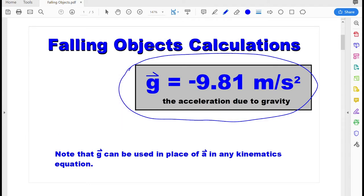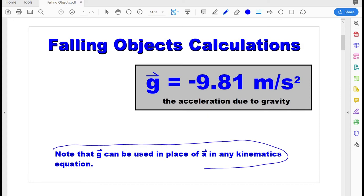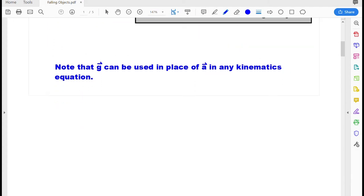The other thing you need to keep in mind is that all this number is, is an acceleration. So you can just replace the a variable, the acceleration variable, in any of our kinematics formulas with this number, and then do the calculation as you normally would. And we have a new kinematics formula we're going to be looking at here today that we're going to get a little bit of practice with.